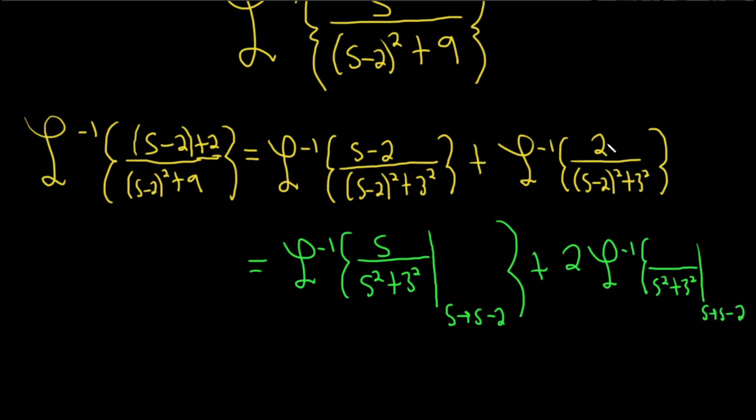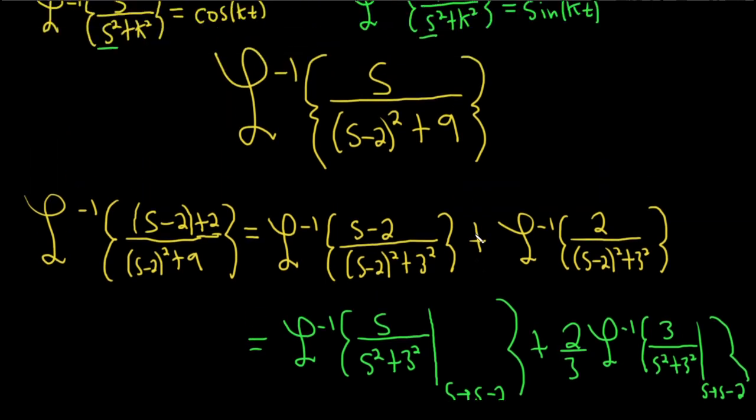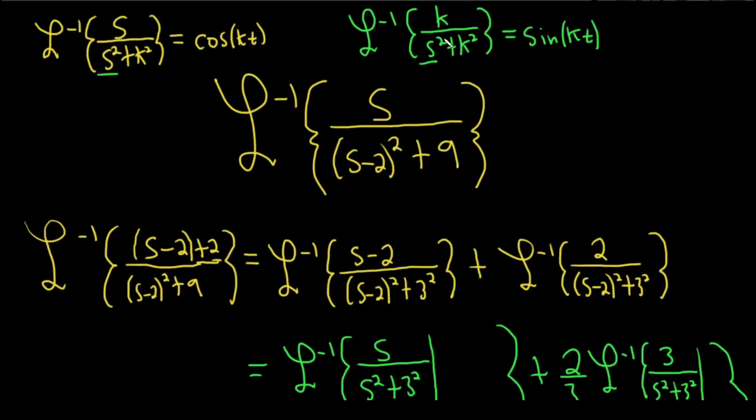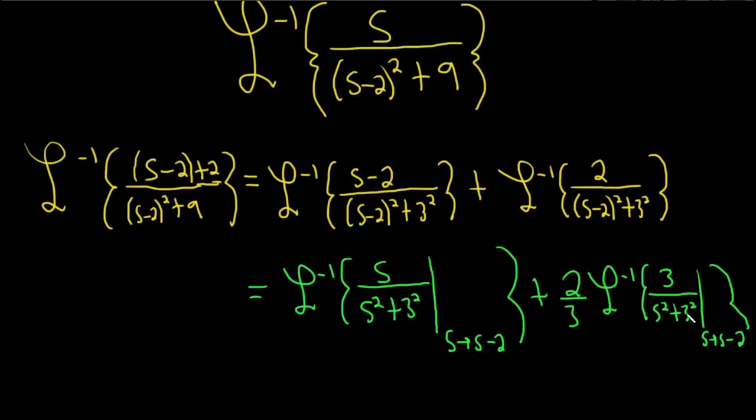And then there's a 1 here if I pull the 2 out, but we need a 3 there. So I'm going to put the 3 there and divide by it. That's so we can use the formula. Remember the formula, let me scroll up so you can see it, has a k, and so here the k is 3. You see the formula k right here, the k? So k, k, so k, k right there. So you want that k there. So I put it there, and then I took it away.